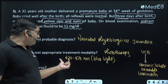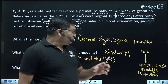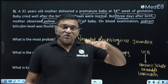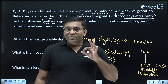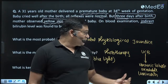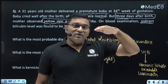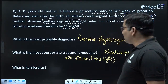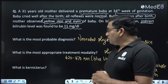Bilirubin absorbs light of 420 to 470 nanometers, which is blue light. The bilirubin level decreases because unconjugated bilirubin is converted into a water-soluble excretable photoisomer of bilirubin — that is lumirubin — and it is excreted in the urine. So bilirubin level decreases and jaundice decreases. Phototherapy is given in the treatment of neonatal physiological jaundice.